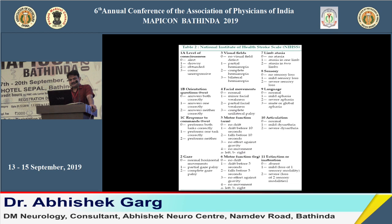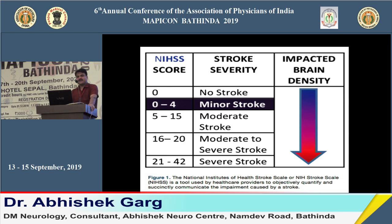The NIHSS scale is available online and on apps. A score of 0 to 4 indicates minor stroke; 5 to 15 indicates moderate stroke; and more than 15 indicates severe stroke, suggesting large artery occlusion.